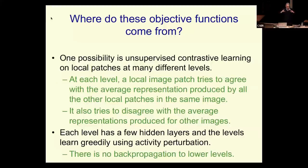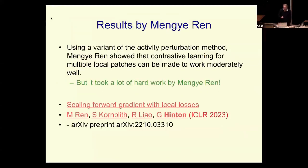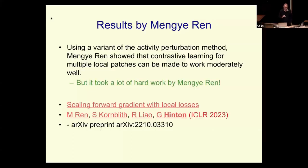If you're very persistent, you can make that work moderately well — it works better than all other biologically plausible learning algorithms, but still doesn't work nearly as well as backpropagation. There's a paper about this at ICLR by Meng Yi Ren, who did all the difficult work. The description I gave is slightly simplified, but the paper is there. It took a lot of hard work and is a fairly dense paper.